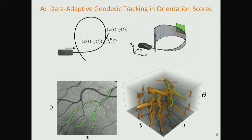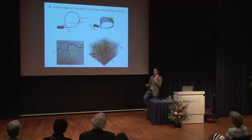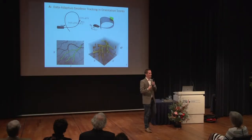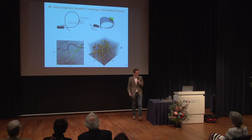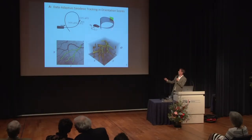Let's have a look at tracking first — data-adaptive geodesic tracking in orientation scores. Suppose I have a car path. I can lift car paths to position and orientation space, where the height is basically the orientation of the car. The car has only two controls: you can hit the gas or you can turn the wheel. That means you have only two controls, which means you apply a sub-Riemannian structure on this space of positions and orientations.